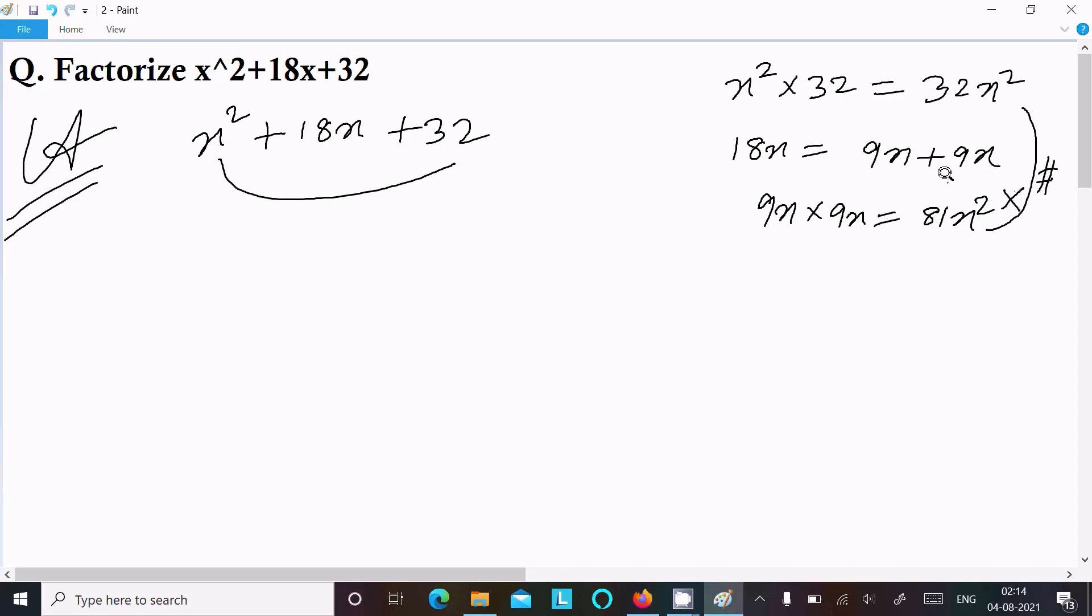Next, taking 18x again. If I use 11x plus 5x, that is equal to 16. So we need to take 11x plus 7x. If you add this, it equals 18x, 11 plus 7 is 18x. But when I multiply 11x times 7x, it equals 77x squared. So 77x squared is not equal to 32, so this is also rejected.